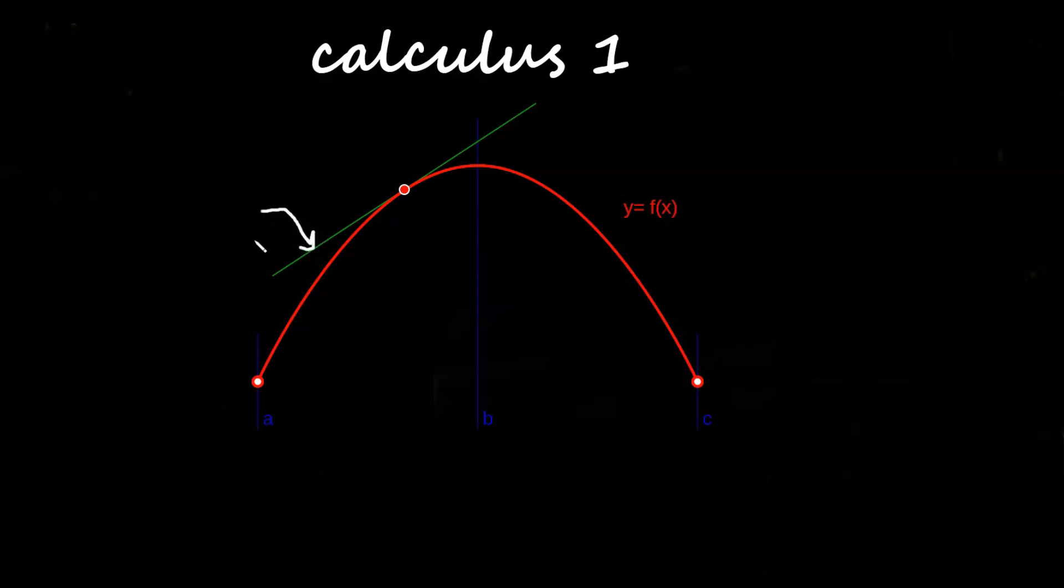Calculus 1 deals with finding the slope of the line tangent to a point on a curve. A line that touches a point on a curve and touches no other point is called a tangent line. All points on a graph have a tangent line and there are infinitely many because there are infinitely many points.